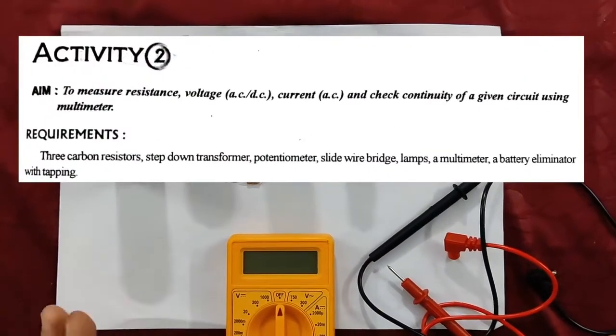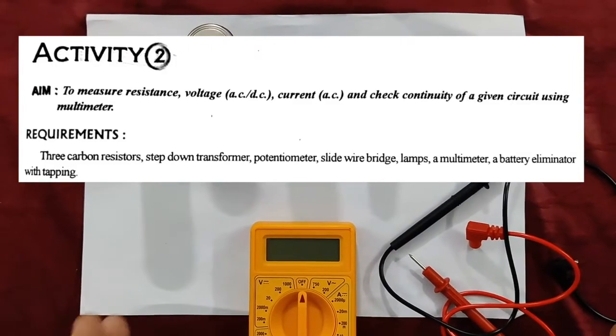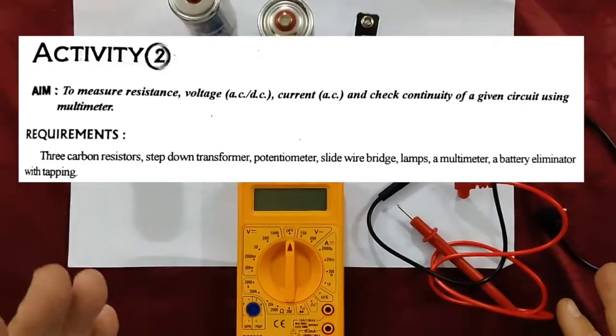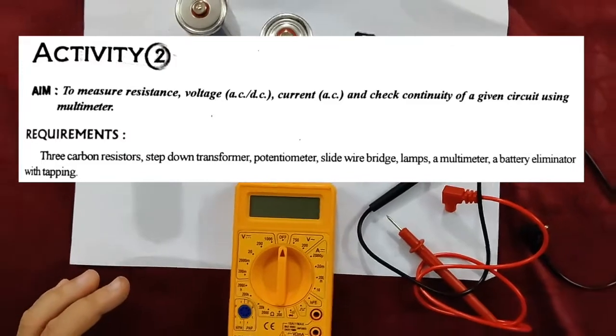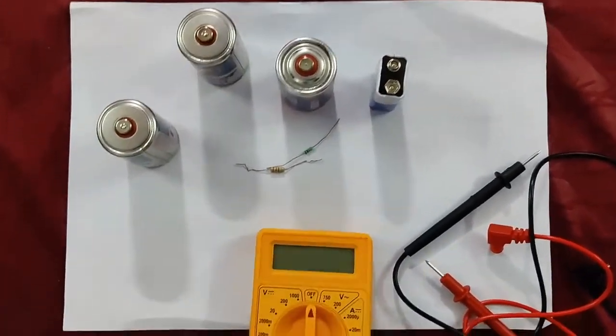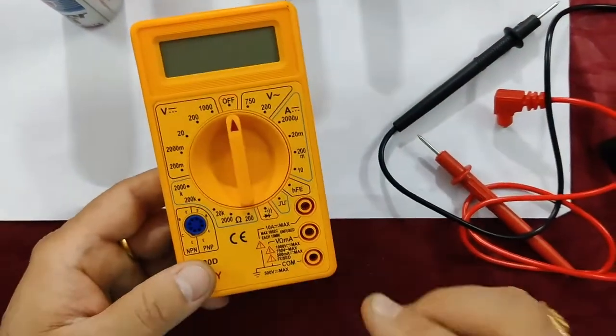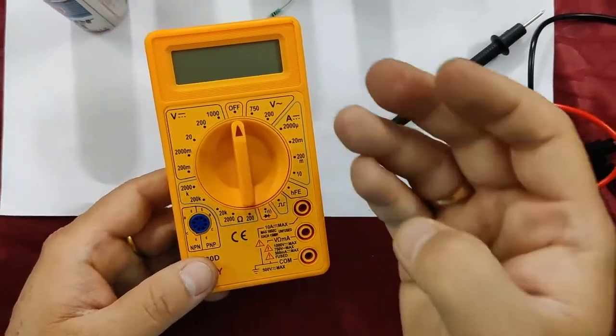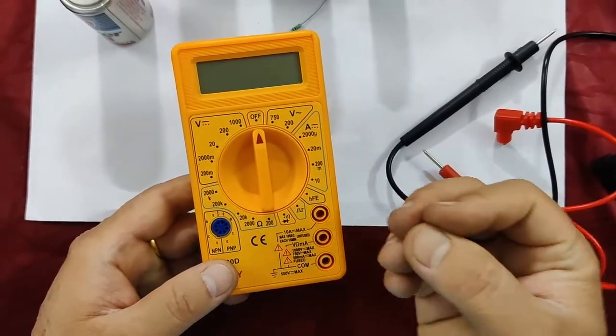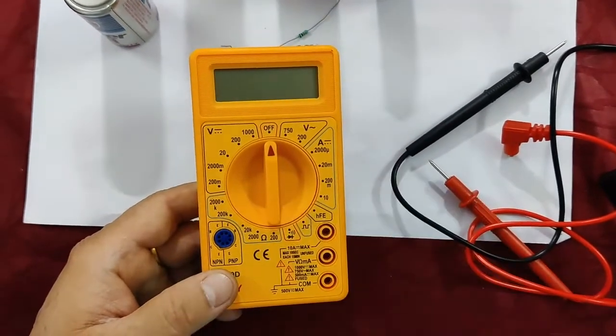There is to measure resistance, voltage AC, voltage DC, current AC and check the continuity of a given circuit using a multimeter. So first of all, the multimeter is a device. With this device, we can measure voltage, current, diode and resistance in different ways.